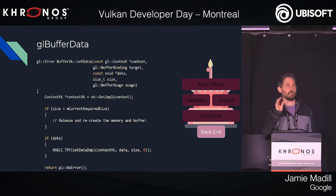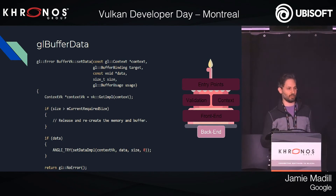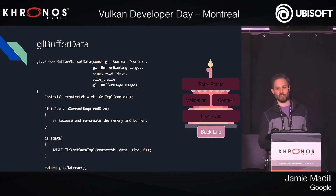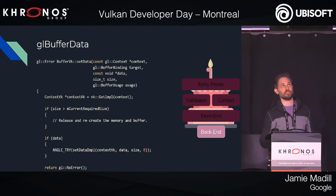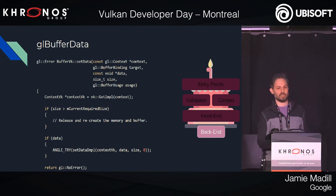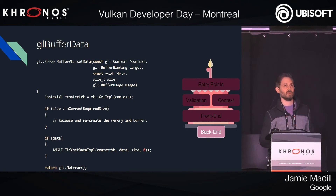Here is the Vulkan back end — this is a simplified version with the Vulkan boilerplate removed, which would make you really squint to read on a slide. All this is doing is checking whether to recreate the store, then calling Vulkan. And if there's data passed in, it also calls Vulkan to update the data. Hopefully that isn't too scary — you can see ANGLE is not a monster when it comes to understanding code.